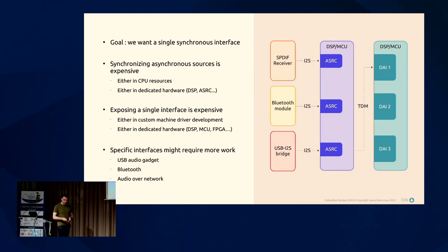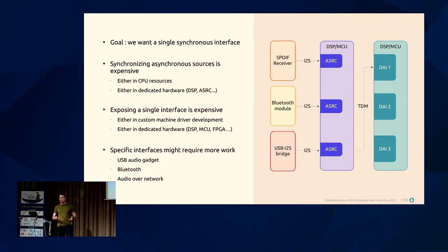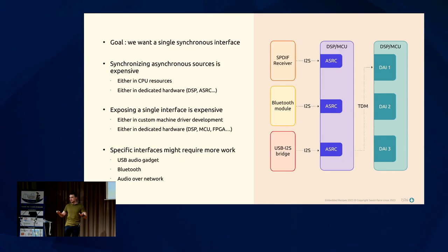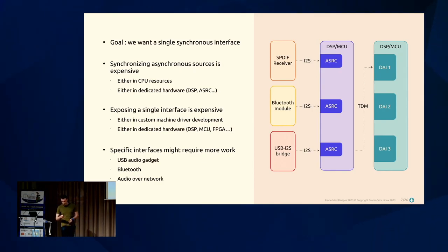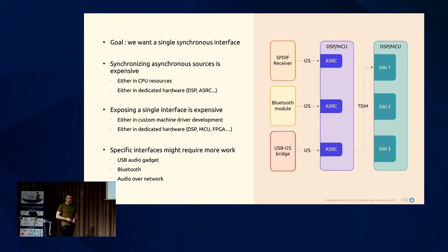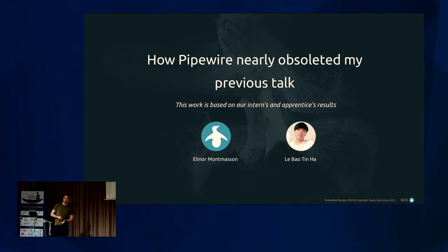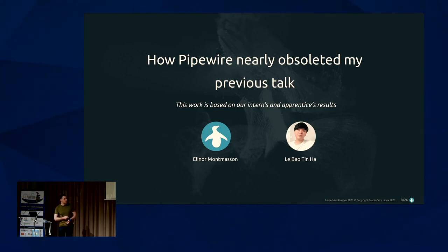You can have multiple different interfaces such as USB, Bluetooth, or audio over network, which are more complex to integrate. One hardware solution would be a dedicated DSP to merge and resynchronize everything, but that's expensive. Another option is a custom machine driver, but that can be very complex. One question from last year was whether PipeWire could solve these issues — and it turned out to be short-term, not long-term. That's the real title of this talk.